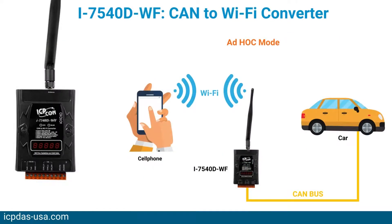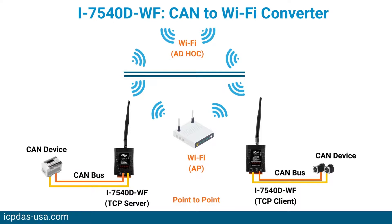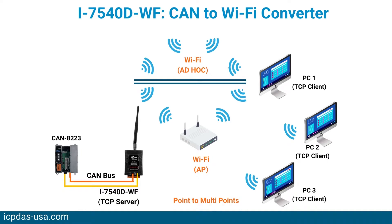The I-7540D-WF supports wireless transmission of CAN data between various CAN networks or a CAN network with a WLAN network. It is highly suitable for connecting mobile or stationary CAN networks and is often used for short ranges up to 100 meters. There are two operating modes: the access point mode and the AD-HOC mode. In access point mode, the data connection takes place over one or several WLAN access points that are often part of the company's internal IT infrastructure. In AD-HOC mode, a direct connection is established between a single I-7540D-WF device and a PC or laptop.